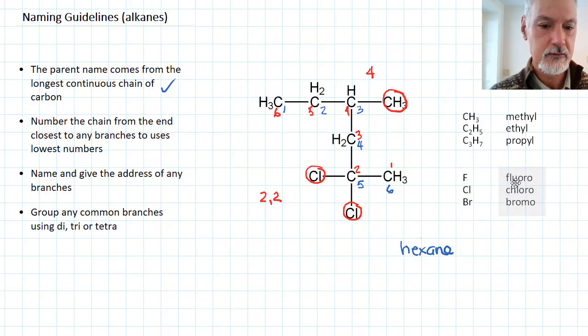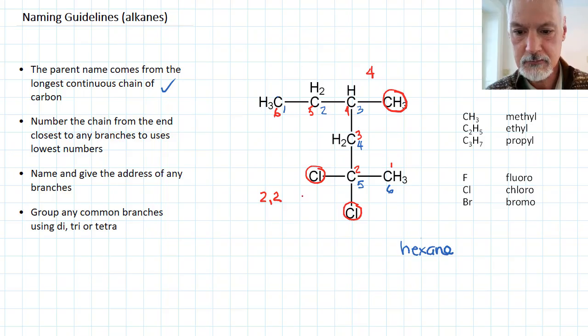And their prefixes are fluoro, chloro, or bromo. So in my particular case, I have two chlorines coming off, so I would refer to them as 2,2-chloro. And because there's two of them, I would employ dichloro with a hyphen. Up here, this is a methyl group, so this branch would be called 4-methyl.